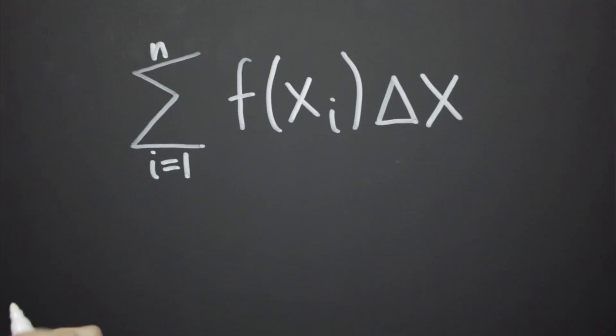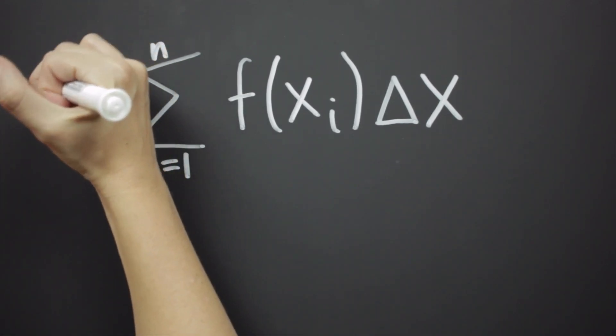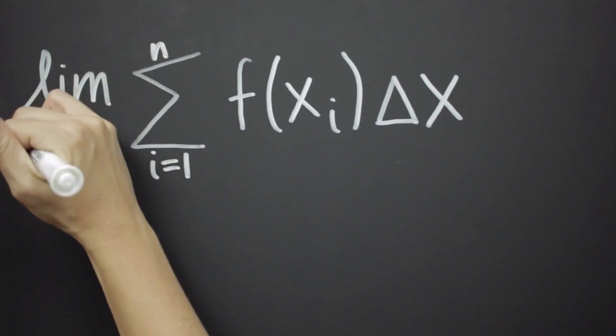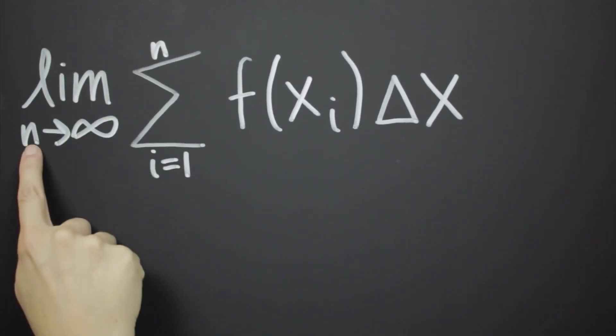So if we want to turn this Riemann sum into an integral, all we have to do is slap this limit on the front of it, which says that we're using an infinite number of rectangles, n, because we're taking the limit as n goes to infinity.